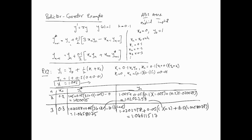In this way you can continue calculating using the predictor-corrector method. The fourth-order predictor-corrector shown in a previous video has longer formulas but works the same way. For those higher-order cases it makes more sense to implement the method using a computer — either Excel or preferably something like Python.